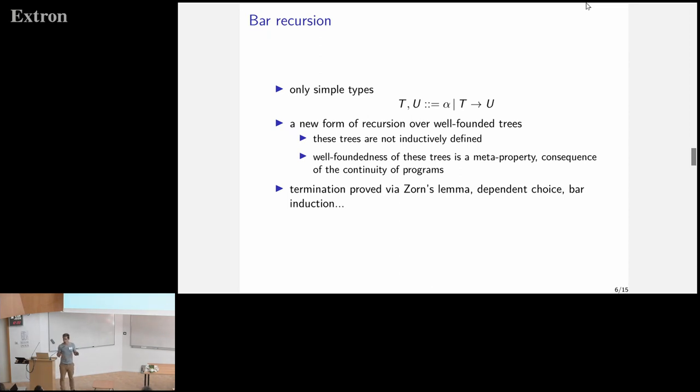Now about bar recursion. In bar recursion, you don't have polymorphic types. Everything is simply typed. But you have a new form of recursion, which is a recursion on well-founded trees. The well-foundedness of these trees is not something that comes from inductive structures. It's just a property at the meta level that comes from mainly continuity of programs. For termination of this new form of recursion, because you still have a normalizing primary language, termination can be proved by various techniques: Zorn's lemmas, dependent choice, bar inductions, or things like this.